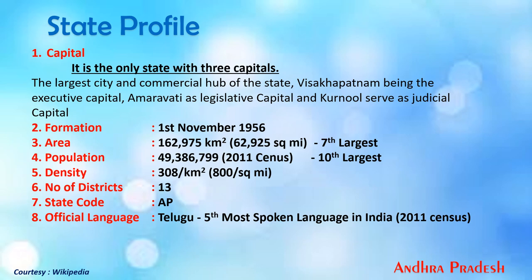Andhra Pradesh is the seventh largest by area and tenth largest in population. The density is 308 per square kilometer. There are 13 districts, and the state code is AP. The official language is Telugu, which is the fifth most spoken language in all of India as per the 2011 census.